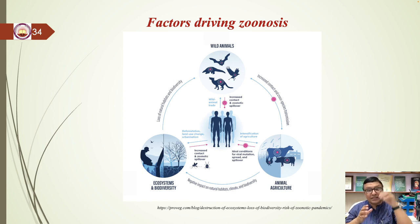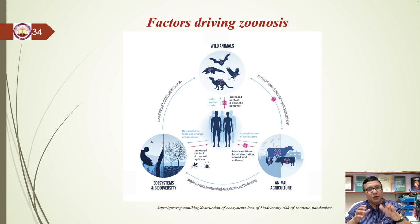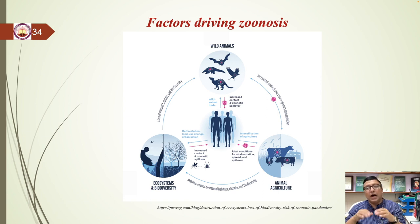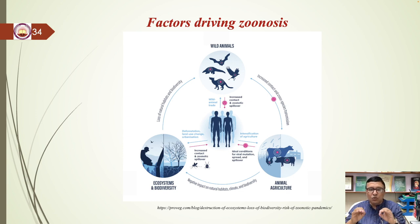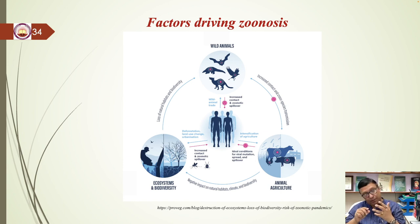The most notable example is bird flu, also known as avian influenza, which originally circulated in wild birds before infecting domestic poultry and eventually spreading to people. On a broader level, scientists look at three types of changes that allow virulent diseases to migrate from an animal host to a human host: number one, changes in the environment; number two, changes in the host; and number three, changes in the pathogen.